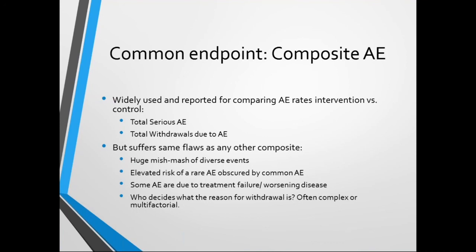Who decides what the reason was for withdrawal? It's often complex and multifactorial. Perhaps the patient wasn't getting much efficacy from the treatment and had a mild adverse effect, so they decided it wasn't worth pursuing or they were too busy to continue. The main problem with a composite measure is that the elevated risk of a rare adverse event may be obscured by common adverse events—for example, mortality occurring in 1% could be obscured by dry mouth, nausea, or vomiting occurring in 10% or 20% of participants. You might miss the signal for a serious adverse event that has lower frequency than the common ones. It's a real challenge interpreting composite adverse events, and they should be treated with extreme caution.